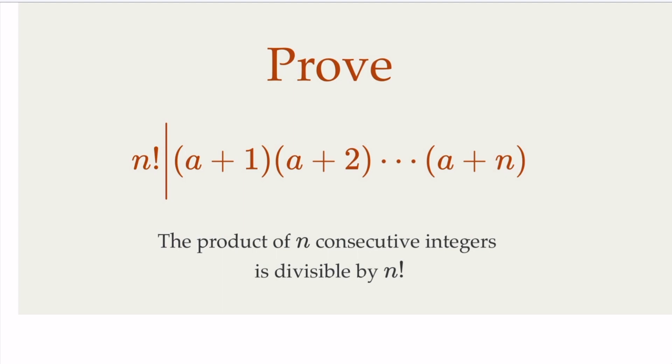We try to prove a well-known fact regarding n consecutive integers. That is, the product of them is divisible by n factorial. So in this case, a is a positive integer, so integers from a plus 1, a plus 2, up to a plus n, the product of this is a multiple of n factorial.